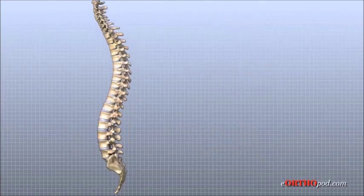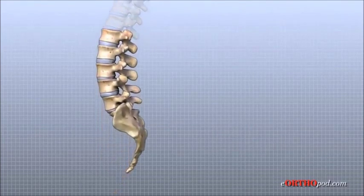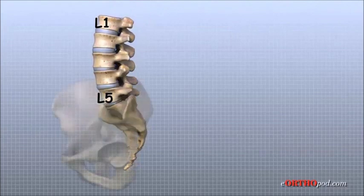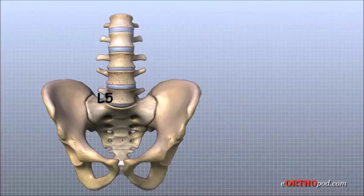The lumbar spine is made up of the lower five vertebrae. Doctors often refer to these vertebrae as L1 to L5. The lowest vertebra of the lumbar spine, L5, connects to the top of the sacrum, a triangular bone at the base of the spine that fits between the two pelvic bones.